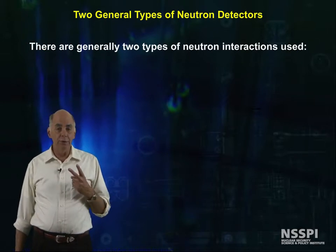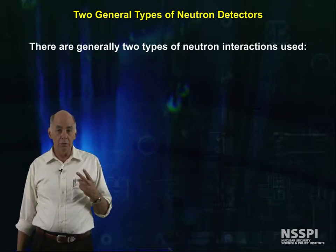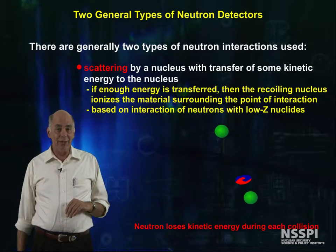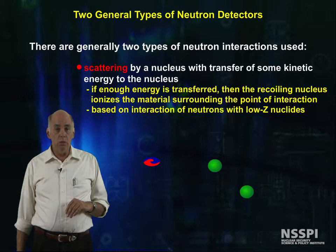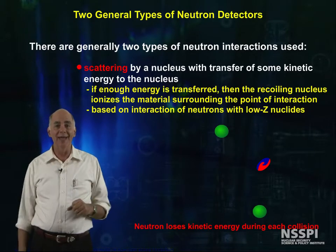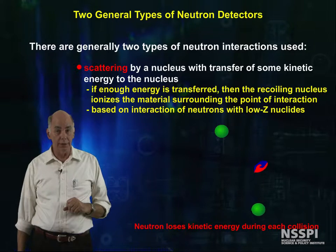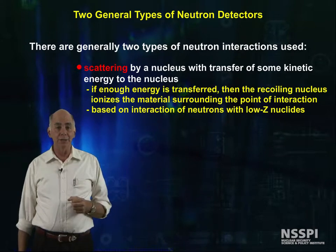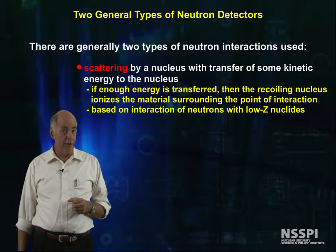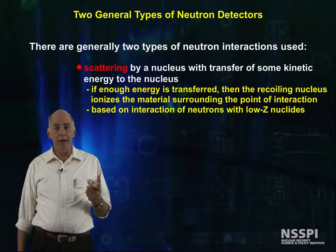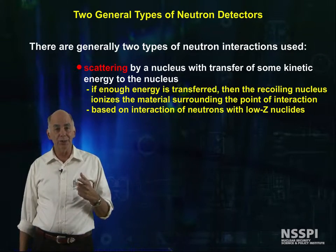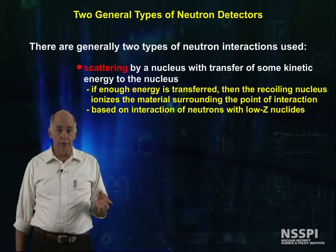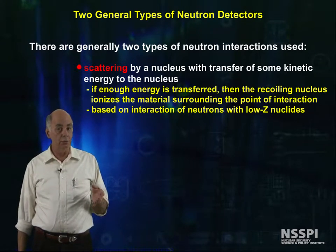There are two types of neutron interactions that we use to detect or measure properties of neutrons. One such reaction is elastic scatter, during which the neutron transfers some of its kinetic energy to a nucleus. If enough energy is transferred, the recoiling nucleus ionizes the material surrounding the point of the interaction. Fast neutrons pass the most energy during elastic scatter with low-Z nuclides, so low-Z materials are always used for recoil detectors.